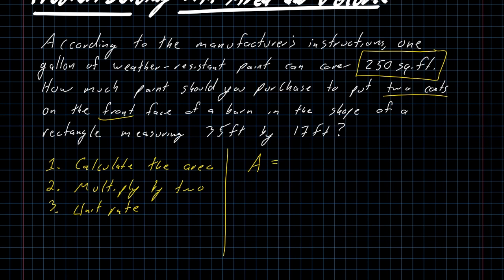Start off with the area. We are dealing with a rectangle measuring 35 feet by 17 feet. The area of a rectangle is length times width. In this case, that's going to be 35 feet times 17 feet. And my calculator is quite happy to tell me that 35 times 17 is 595 square feet.